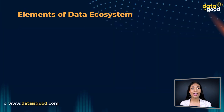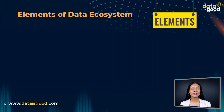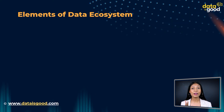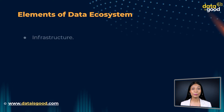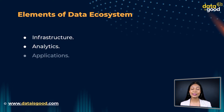Now, we will discuss the elements of a data ecosystem. There are three elements to every data ecosystem, and these are infrastructure, analytics, and applications.